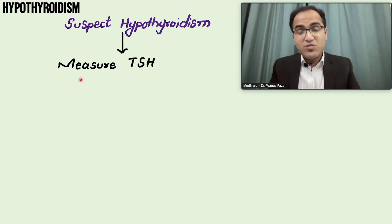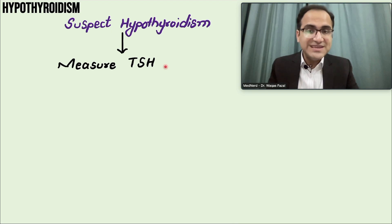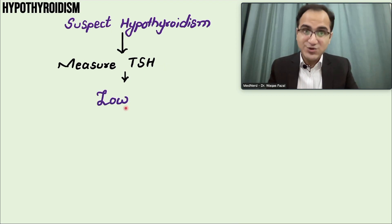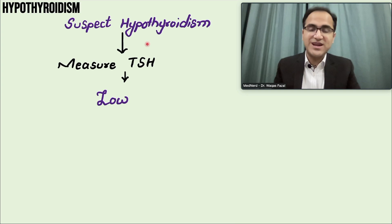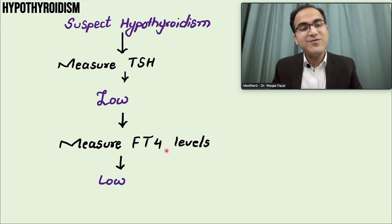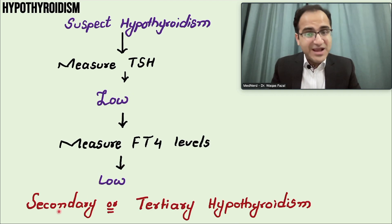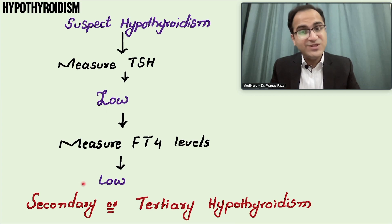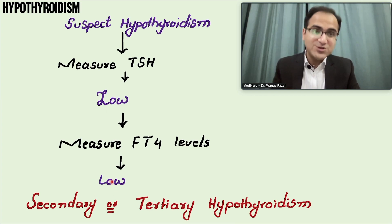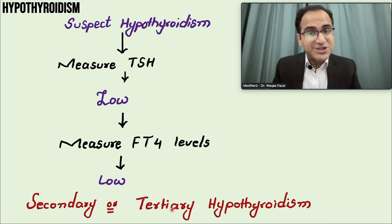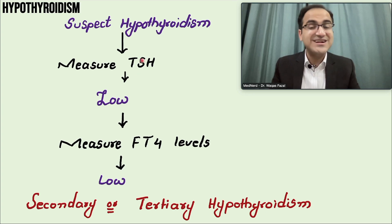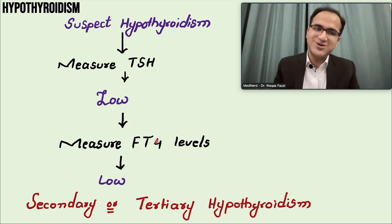That was all about primary hypothyroidism. Now coming to another case: if you measure the TSH level and the TSH is low, but the patient is having signs and symptoms of hypothyroidism and the free T4 levels are also low, it means there is a problem with the pituitary gland. This can be secondary hypothyroidism — a problem with the pituitary — or tertiary hypothyroidism, a rarer form where the thyroid-releasing hormone from the hypothalamus is not being secreted, resulting in low TSH and low free T4.